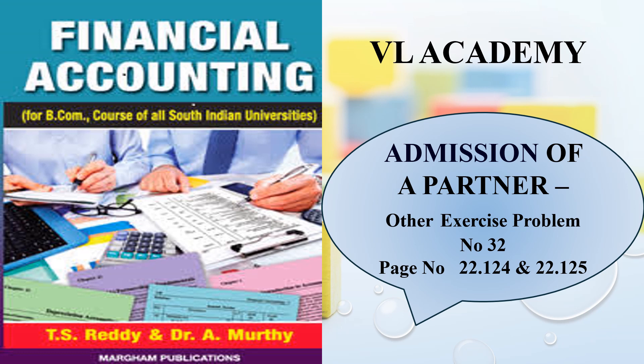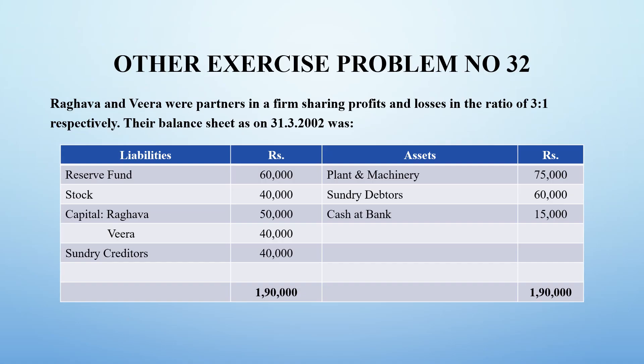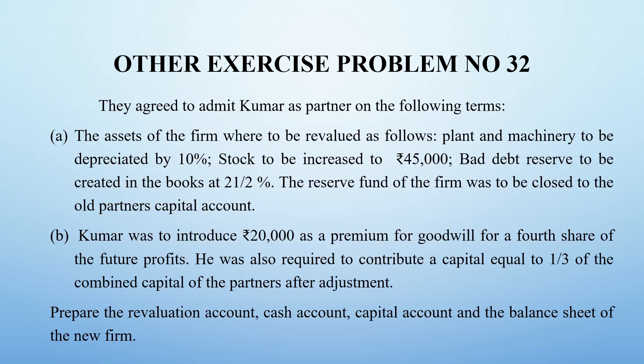Welcome to VL Academy. In this video, we are solving the admission of a partner exercise, problem number 32, from page numbers 22.124 and 22.125. Lewanda Raghava and Veera are partners sharing profit in a 3:1 ratio. This is the status of the balance sheet when they both were partners as on 31-3-2002. When Kumar enters the business, these are the changes that happen.